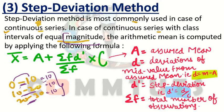In case of continuous series with class intervals of equal magnitude, the arithmetic mean is computed by applying the following formula. When you have a continuous series with equal class intervals and you use the step deviation method, the formula applied is: X̄ = A + (Σft' ÷ Σf) × c. Here, A is the assumed mean and d is the deviation of the mid value from the assumed mean, that is d = m − a.